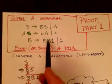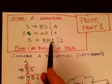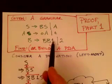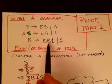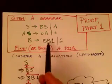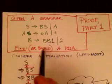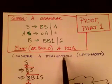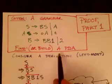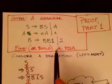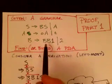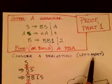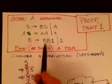Now if a string is part of this language, that means that string has a derivation using this grammar — it has a parse tree or leftmost derivation or rightmost derivation. So let's consider the leftmost derivation of some string that's in this language. If a string is in this language described by this context-free grammar, then there will be a leftmost derivation using the rules of this grammar.